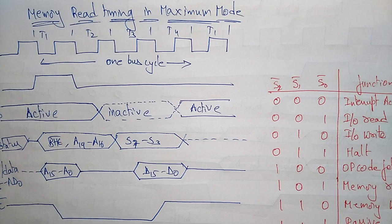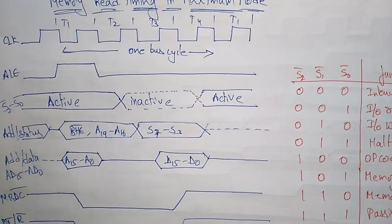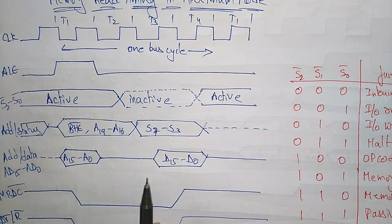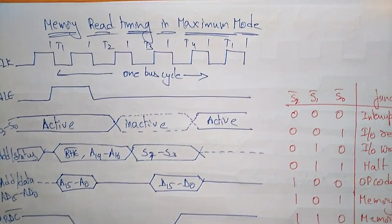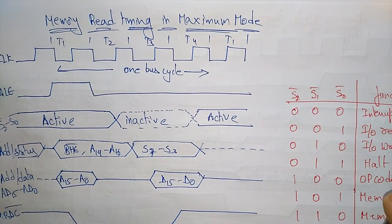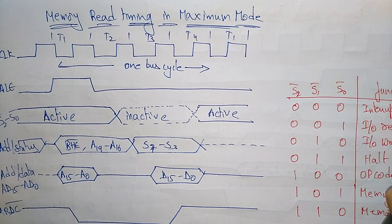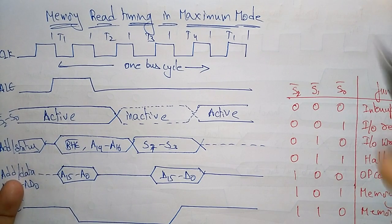Hi students, welcome back. In the previous video I explained about the maximum mode 8086 system. Now let us see the timing diagram for the memory read timing and the memory write timing in the maximum mode of the 8086 microprocessor. This is just like a minimum mode, but the only difference here is we are activating the status signals. The maximum mode will be decided by the status signals given by the different processors.